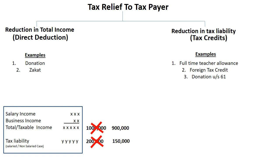After foreign tax credit, the third classification is donation under section 61. Some donations fall in the reduction in total income category — when you donate to those institutes in that manner, there will be a direct reduction from your income. Some donations reduce your tax liability — when you donate to those institutions in that manner, your tax liability is reduced. Which institutions these are will be covered in the onward session.